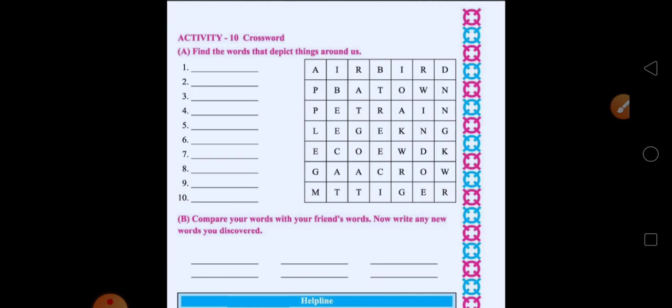Topic things around us. Means, jho crossword diya hai, us mein words hai. Jho, kuanse words hai? Topic things around us. Means, humare around, jho cheeje hai, things hai. Us ke liye words use huye hai. Now, find ten words from the crosswords and write down in the blanks. So, we start to find the words.